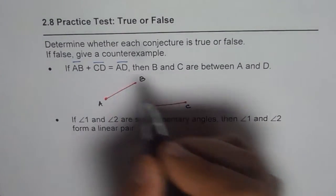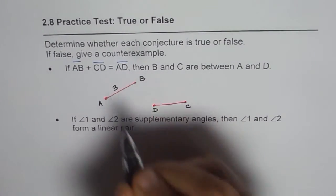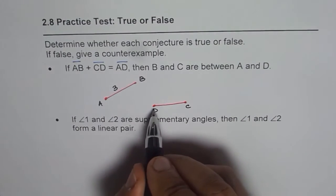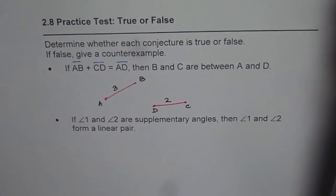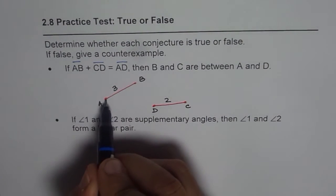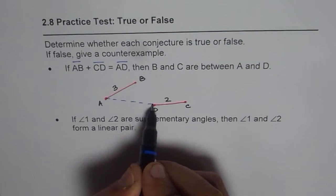Now, if length of AB is let us say three centimeters or three units and that of CD is two units. Three plus two is five. And if I connect A and D and let us say this length connecting A and D is five.